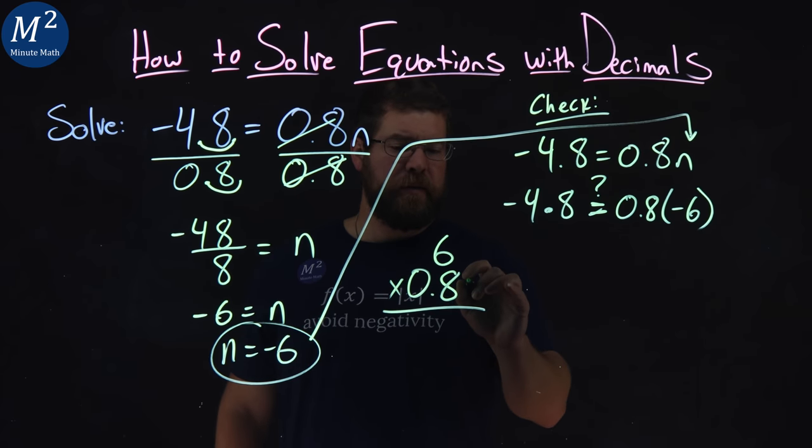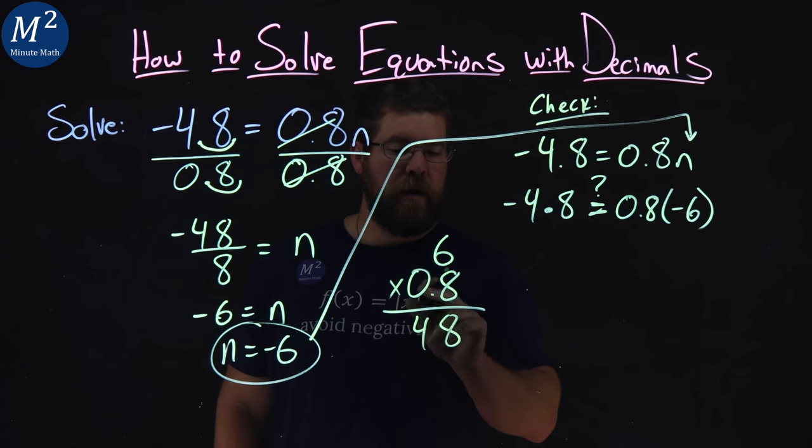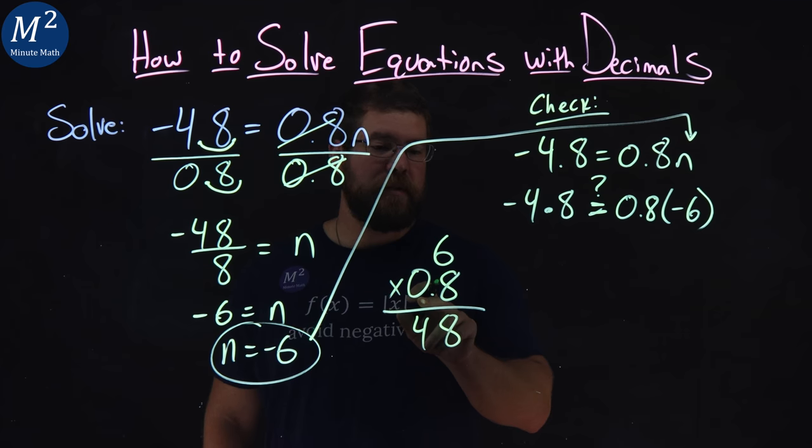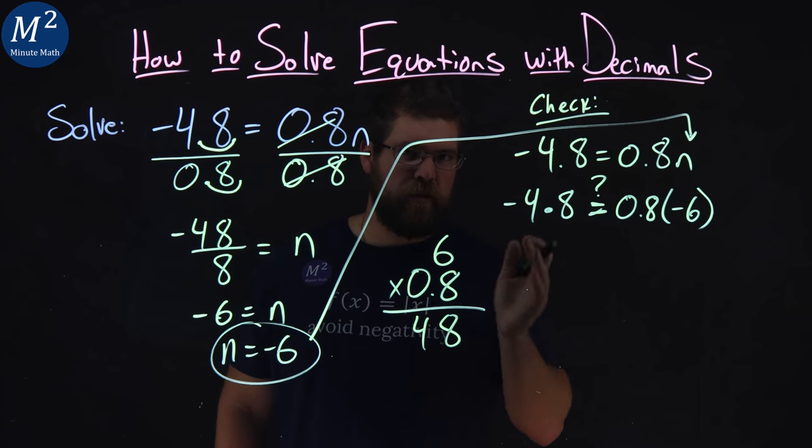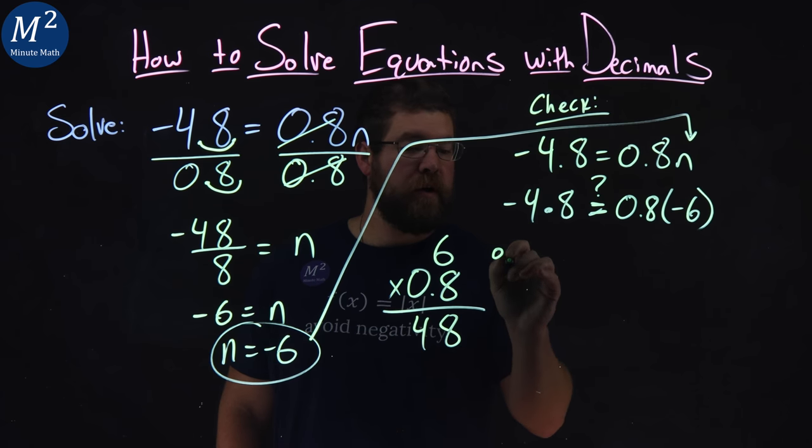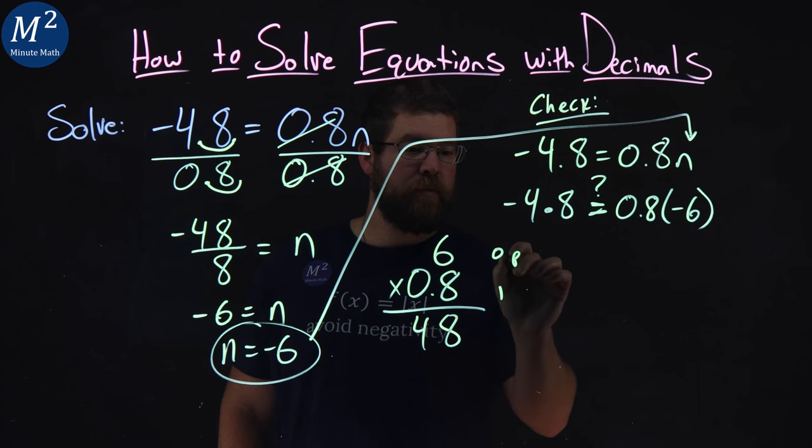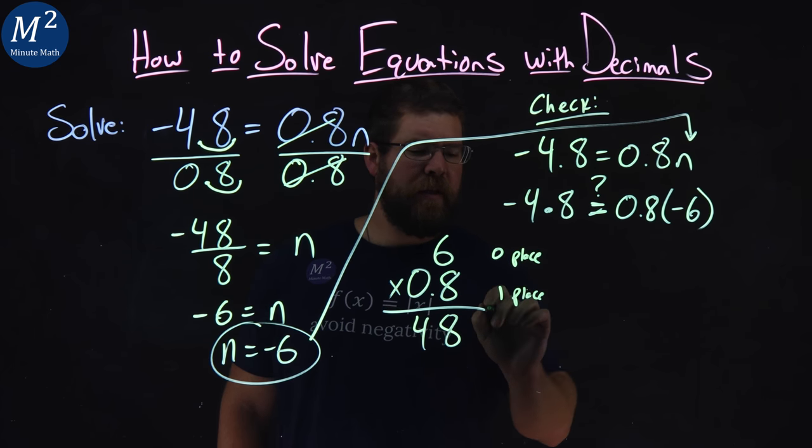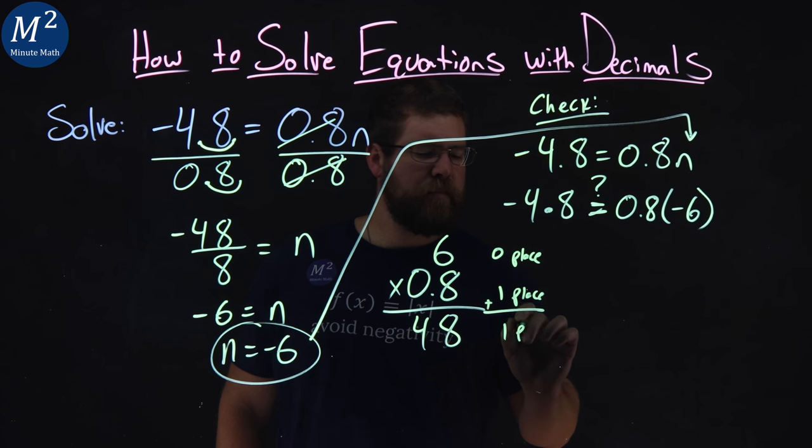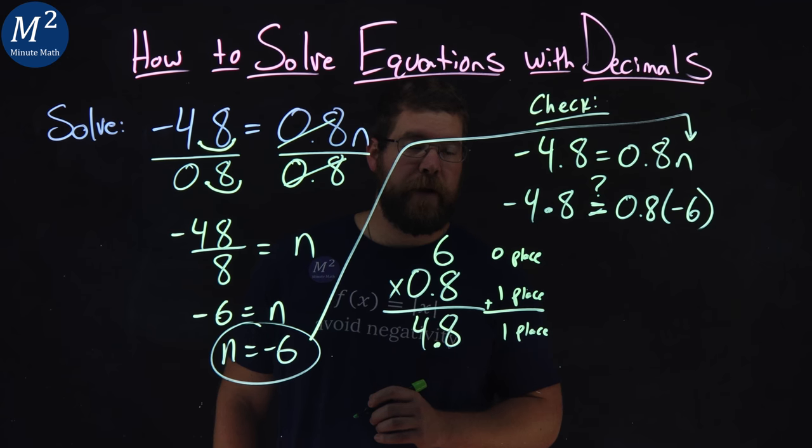The way we multiply these out here, we take the 8, multiply it by the 6, and we get 48. Then we go to the next digit here, the 0 times 6 is just going to be 0. We can ignore that. We count how many decimals we have on each one. 0 here. There's 1 on this one, 1 decimal place. We add them up, and we get 1 place. Meaning, we move the decimal over one spot here, to be 4.8.